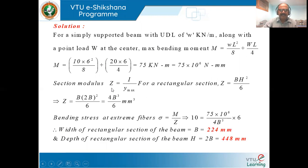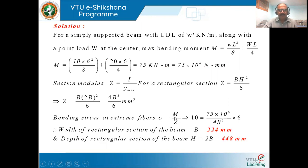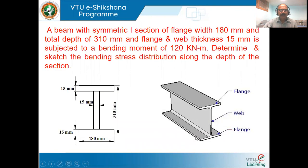Using M/I = σ/y, we rewrite I/y as section modulus Z. For a rectangular section Z = bH²/6, and since H = 2B, substituting and simplifying gives Z = 4B³/6. By substituting the bending moment M = 75 × 10⁶ N·mm and σ = 10 N/mm² into σ = M/Z, we solve to get breadth B = 224 mm and depth H = 2B = 448 mm.